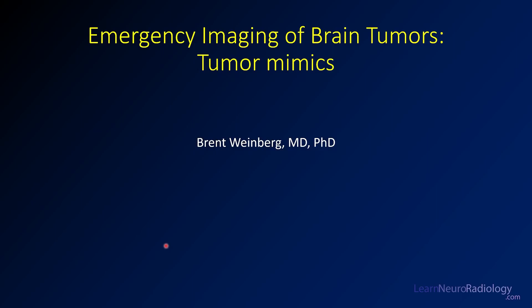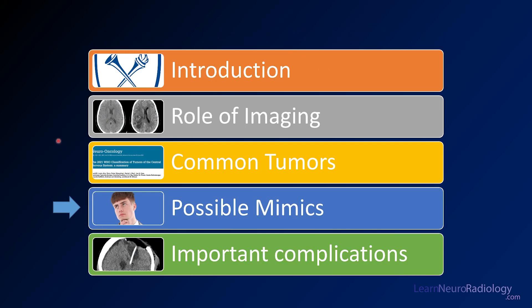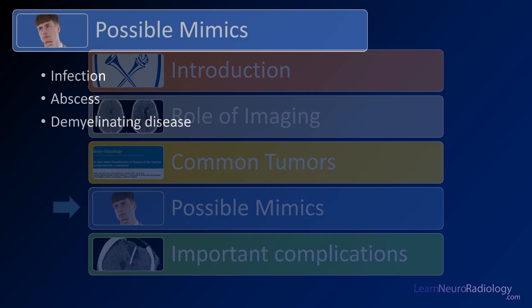Hi everyone, and welcome to Learn Your Radiology. I'm Brent Weinberg. This is Lecture 6 in the Emergent Imaging of Brain Tumors series. We've talked about a lot of the different tumors that can occur in the brain, how you might approach them on CT and in the emergent setting. Now we're going to talk about some of the common mimics that you need to be aware of, so you don't get fooled and can give a smart differential diagnosis for things that look like a tumor but don't end up being one.